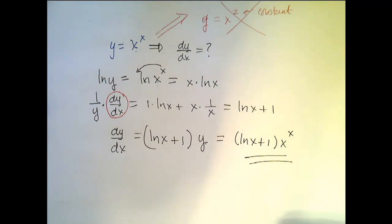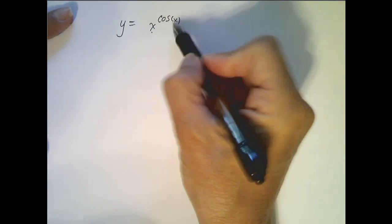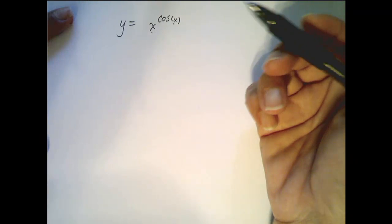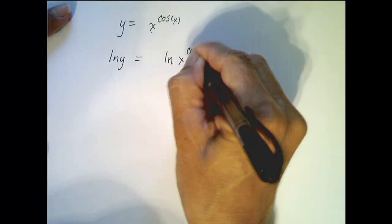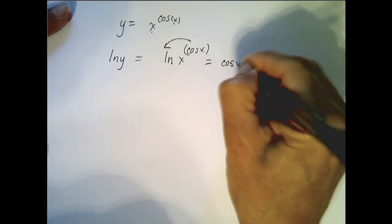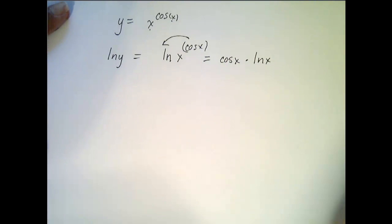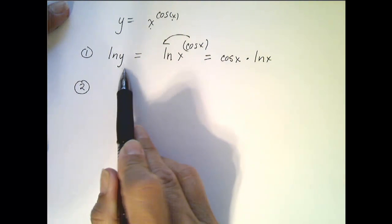Let's look at another example. What if we have y equals x to the cosine of x? Again, x is raised to a function of x, not a constant, so the power rule doesn't apply — this is a great example for logarithmic differentiation. Step 1: take the log of both sides. ln of y equals ln of x to the cosine of x. Bringing the power down gives cosine of x times ln of x.